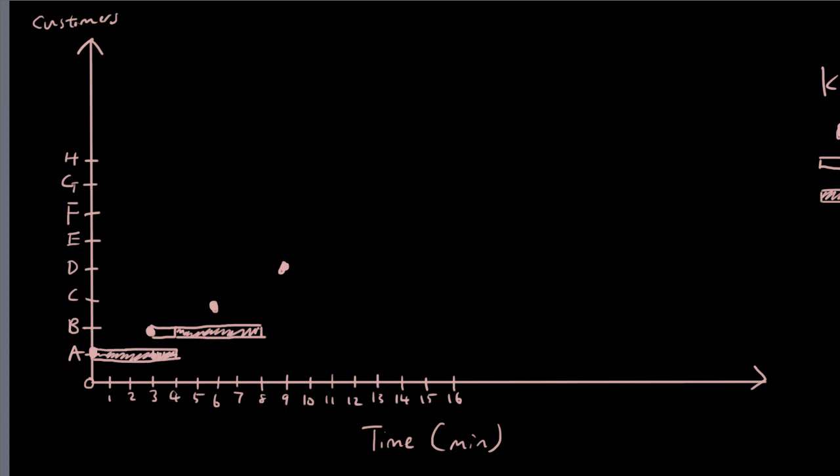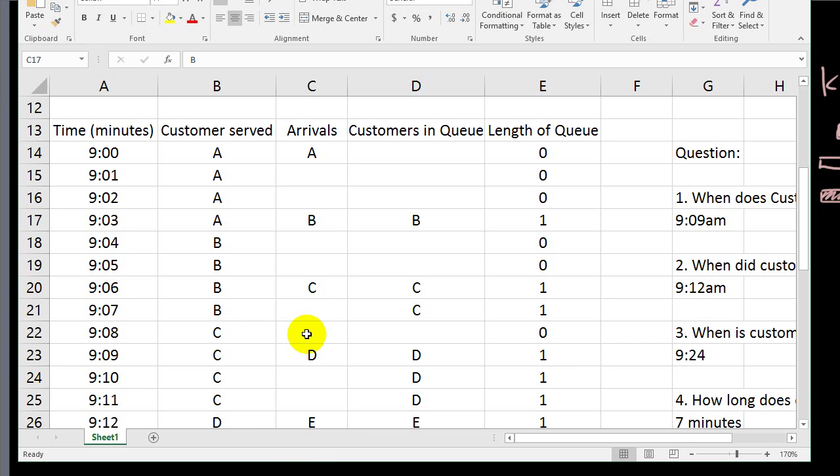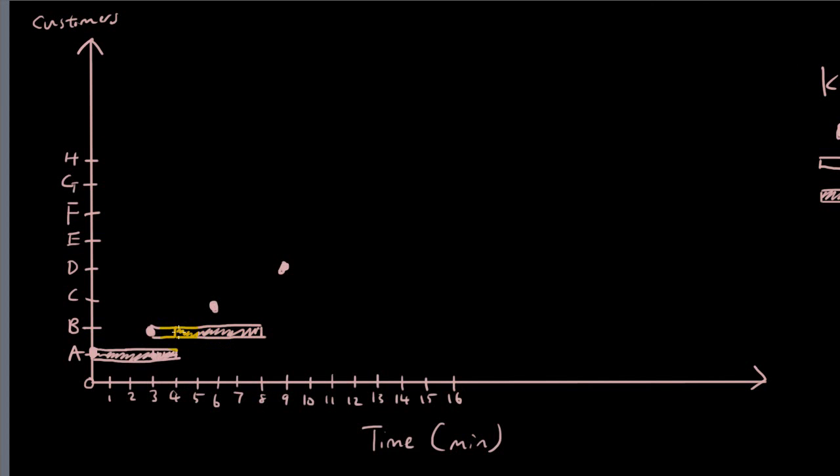If you match it up with our time plot, customer B is being served from four, five, six, seven. So starting from four, they're being served four, five, six, seven. So on the eighth minute, they're gone. Customer C will now have to wait until customer B is gone, and then they're served for four minutes. One, two, three, four.